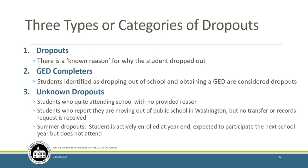We have three types or categories of dropouts. The first is a known dropout—there's a known reason for why the student dropped out. Maybe they attended four years, didn't graduate, chose to pursue other options, had a baby and are staying home to take care of it. Then you have students that exit school and obtain a GED. Unfortunately, even though that's an accomplishment, they're still considered dropouts under federal law.